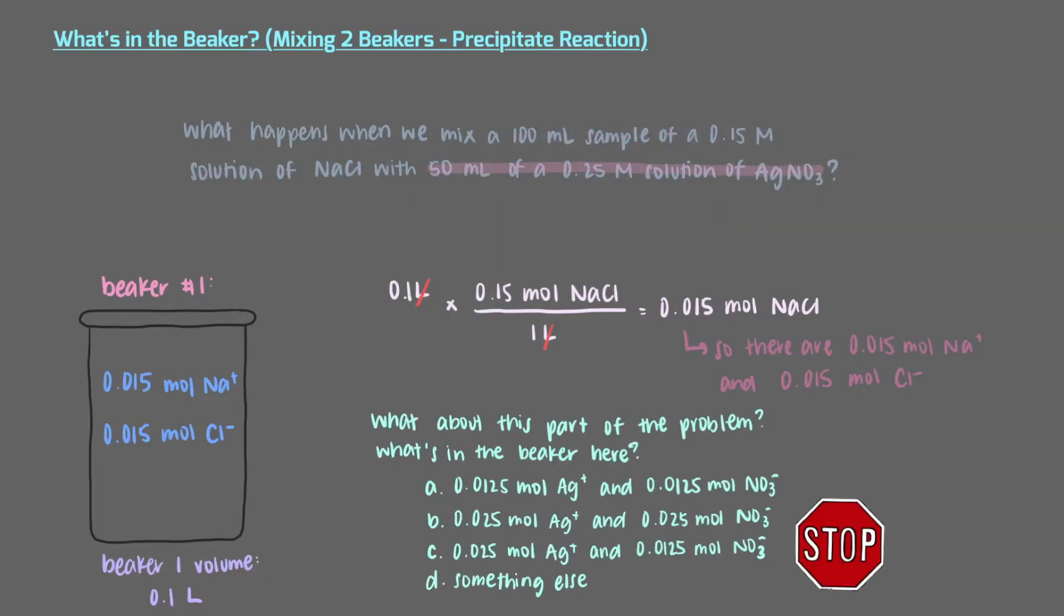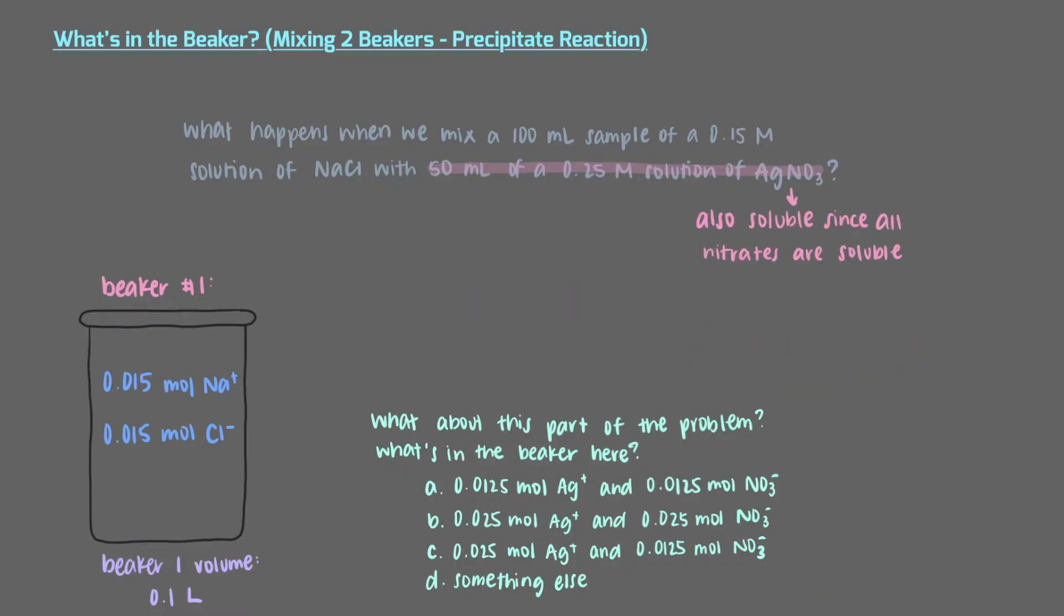What about this part of the problem? What's in the beaker here? Silver nitrate is also a soluble ionic compound. Nitrate compounds are soluble, so the silver nitrate will also break up into ions when dissolved.